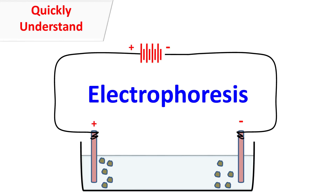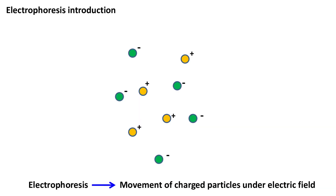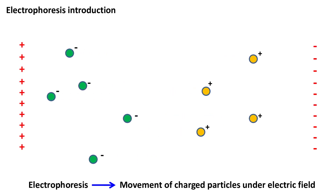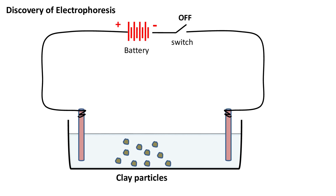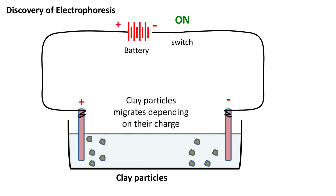Hey guys, Quick Bye Chemistry Basics here. Let's talk about electrophoresis. The term electrophoresis means movement of charged particles dispersed in a liquid medium under the influence of an electric field. The movement of particles under electric field was first discovered by a Russian professor when he was trying to study the effect of electric field on dispersed clay particles. He found that when the electric field is switched on, the clay particles in water show migration.